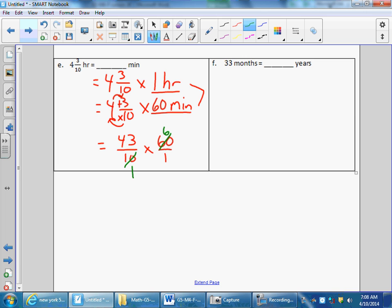I now have forty-three times six on the top, and I'll do some side work for that. It's 258. One times one as my denominator is one. 258 minutes, final answer.